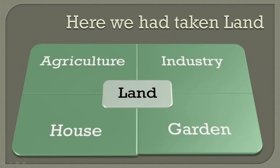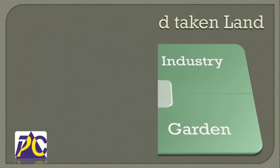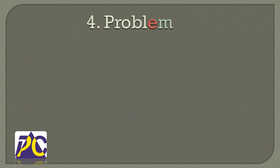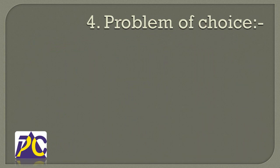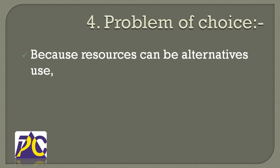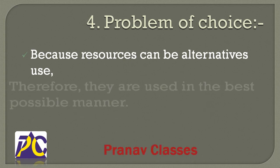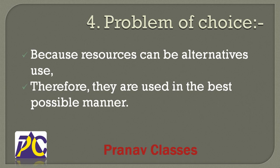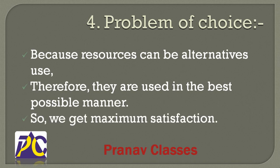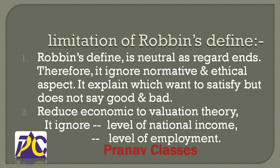Let's take one more example: land. Land can be used for agriculture, for industry, for building a house, or for a garden. We have to decide which use is most advisable for us. Therefore, there is a problem of choice — we have to select that option which will be best suitable for us, because resources have alternate uses and must be utilized in the best possible manner to get maximum satisfaction.